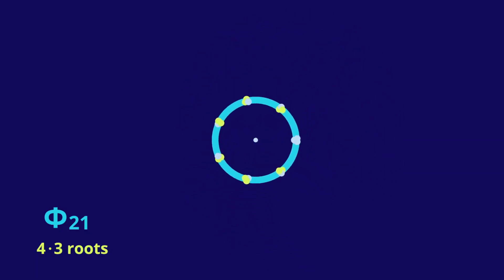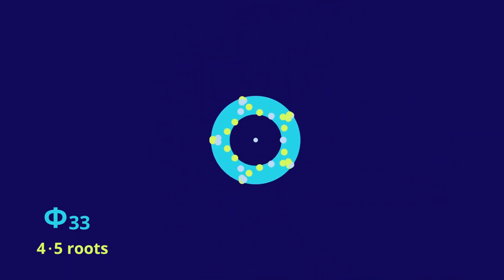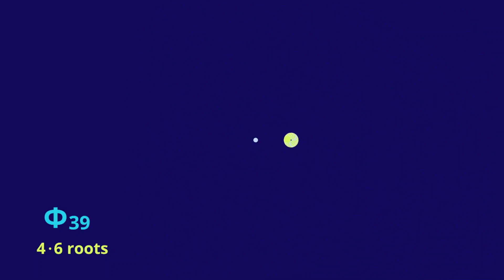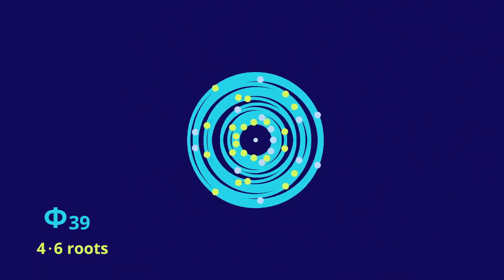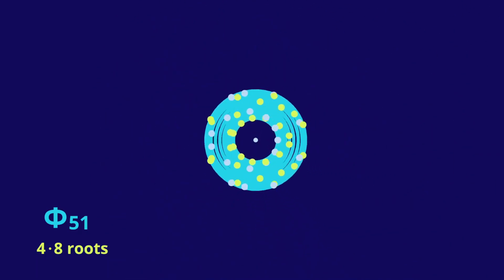For the next triple of a prime, the 33rd cyclotomic has 20 roots. Or 4 times 5. And this time we see a 5-pointed star. The 39th cyclotomic has 4 times 6 roots. And the points again arrange in groups of 3. The 51st has 4 times 8. And we get an 8-pointed star.